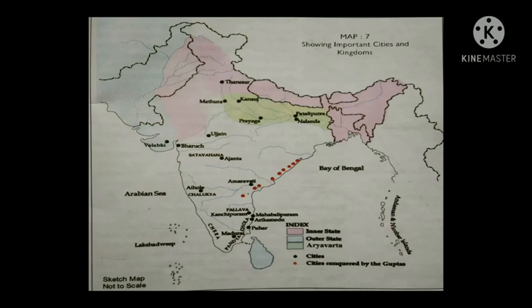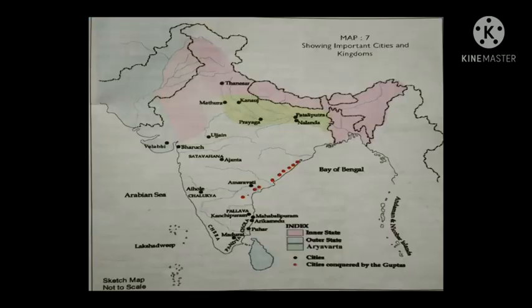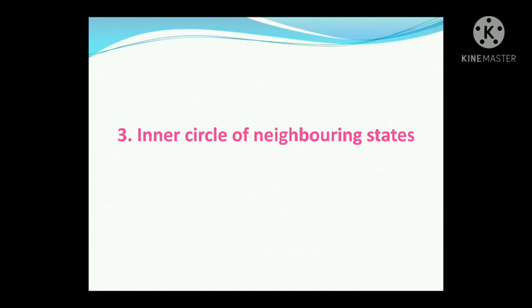The next one is the rulers of Dakshinapatha. In this map, you can see some capitals of Dakshinapatha kingdoms marked on the map by red dots. There were twelve rulers here, and Samudragupta defeated them. As a result, they surrendered to Samudragupta, but after that, Samudragupta allowed them to rule again.